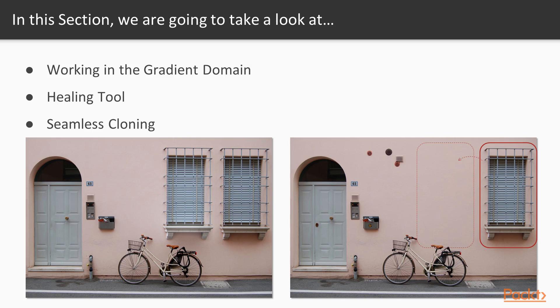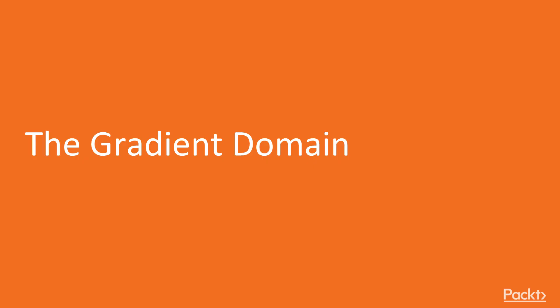As we'll see, there is no need for highly accurate object boundary tracing and it works well even with very rough and approximate boundaries. The seamless flow of colors also automatically corrects the illumination of the cloned object. So what is this so-called gradient domain?